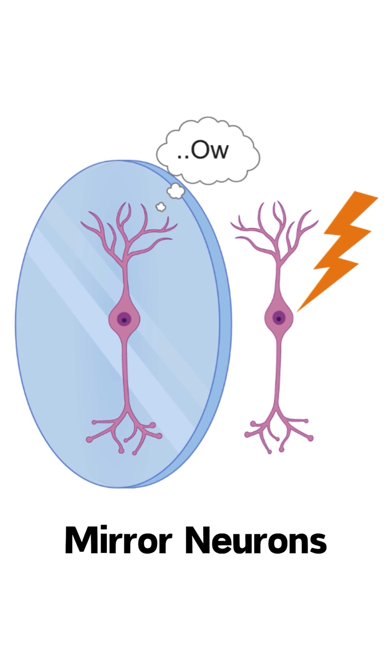Mirror therapy taps into a special group of brain cells called mirror neurons. Mirror neurons fire both when you do an action and when you see someone else doing the same action.